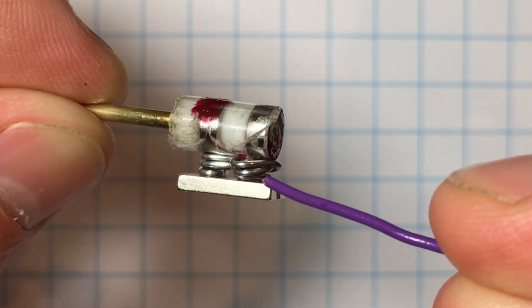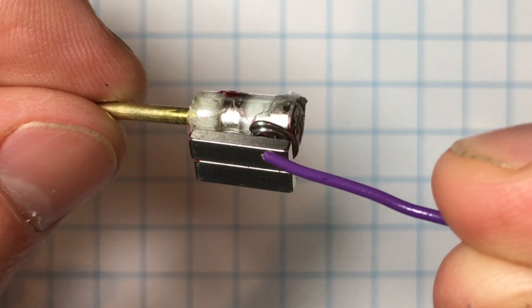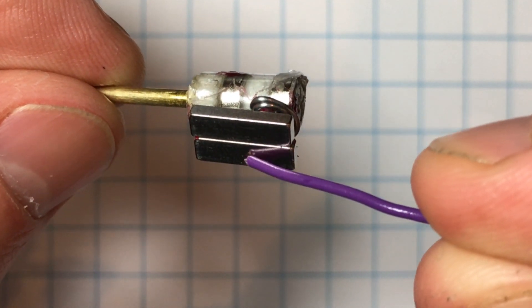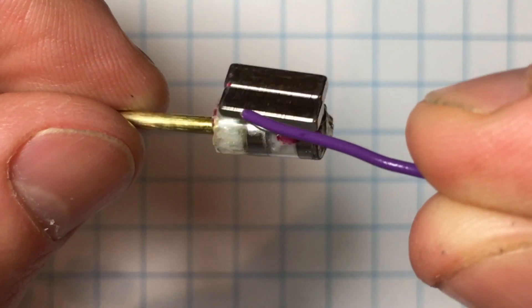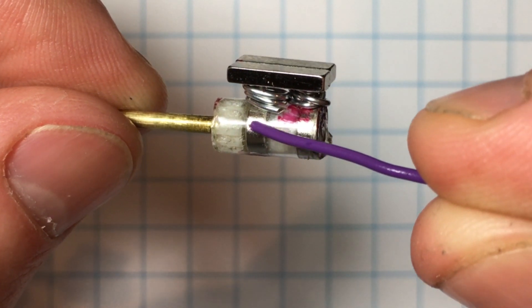In the new design, the flux path is bottom center to outside, across one magnet to top center, and then back to bottom center.